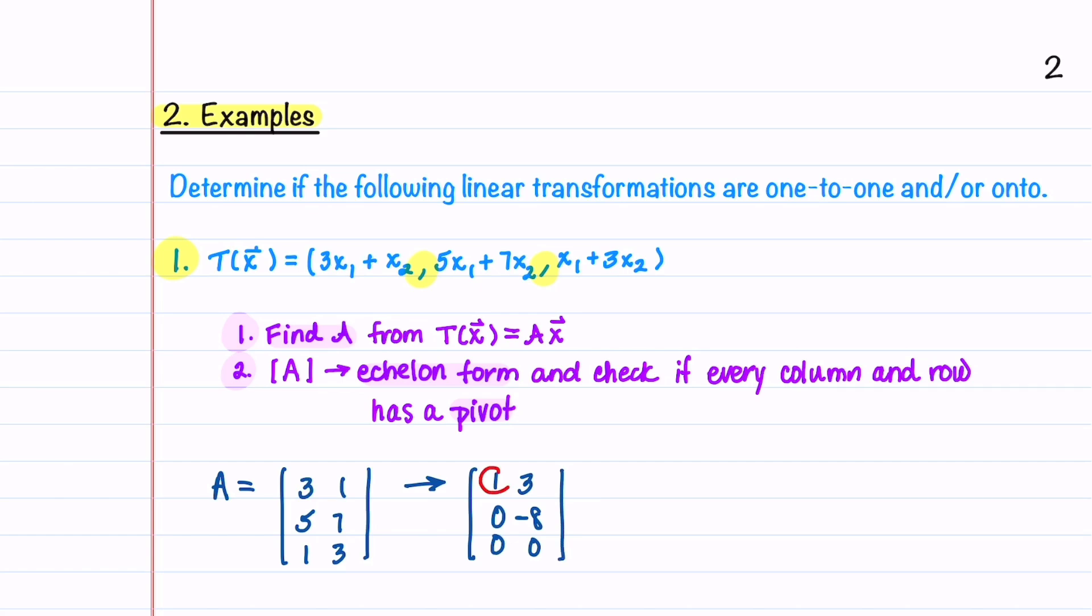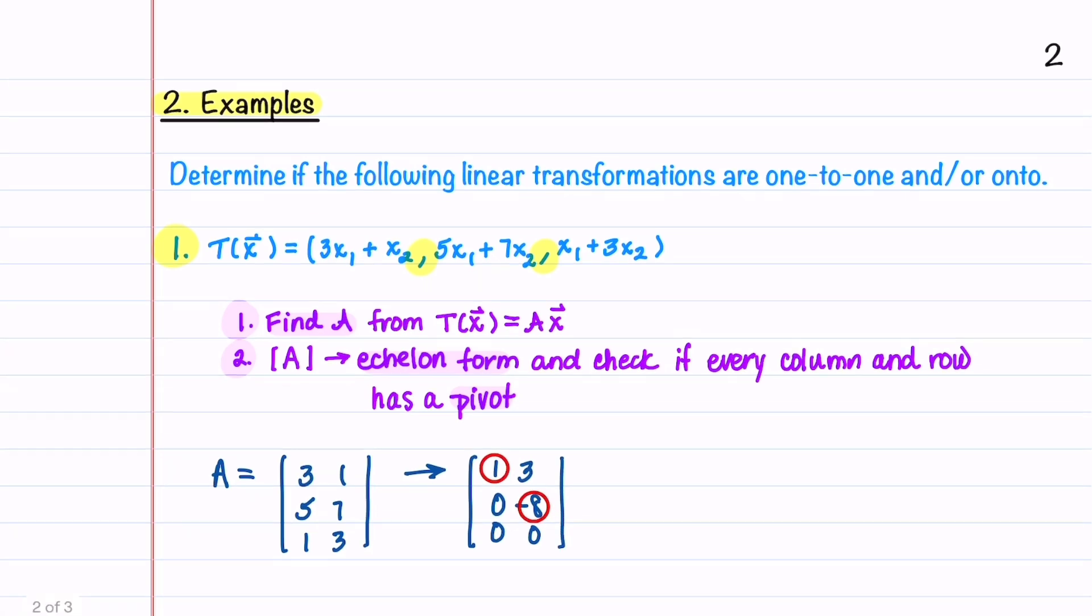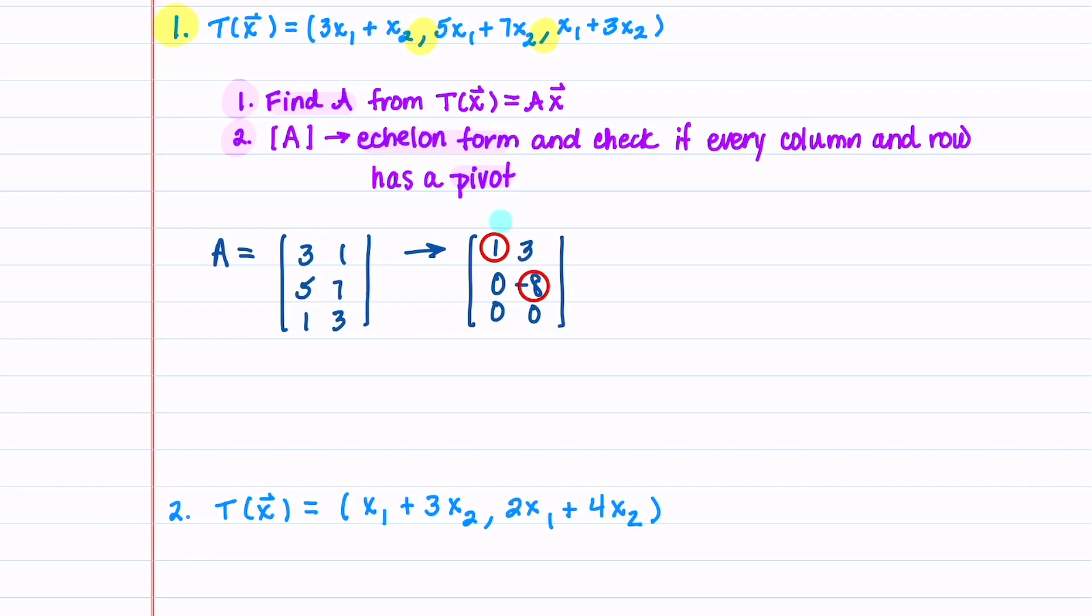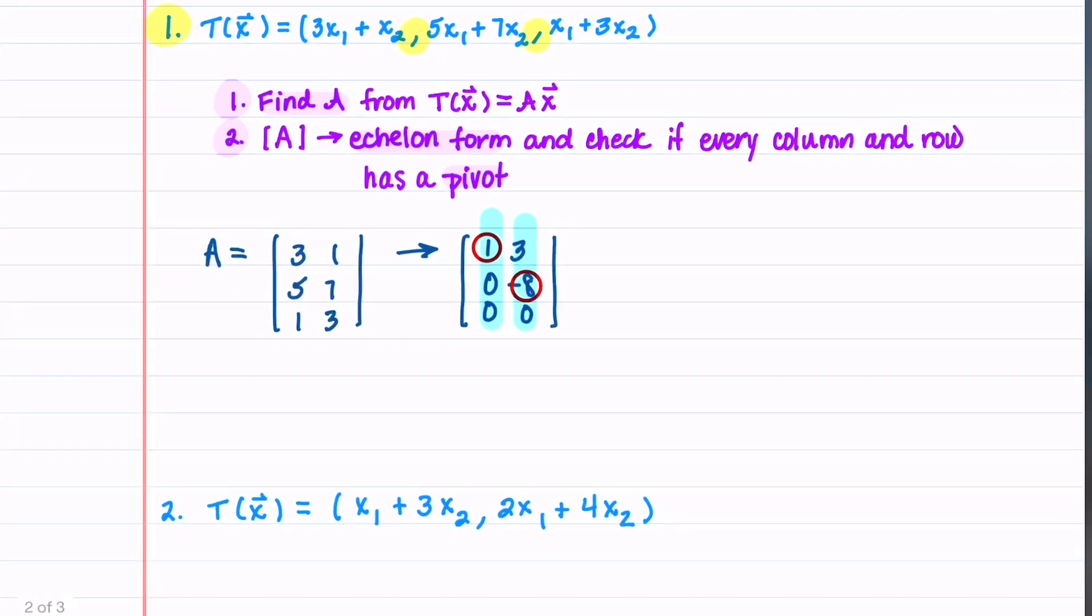Let's now circle our pivots. We can see that every column has a pivot and that's going to tell us that our matrix is one-to-one.